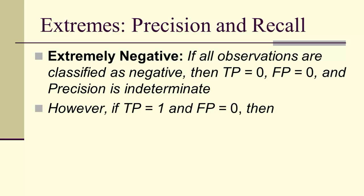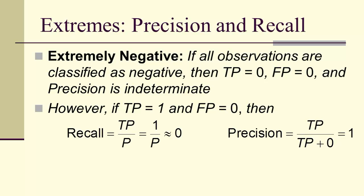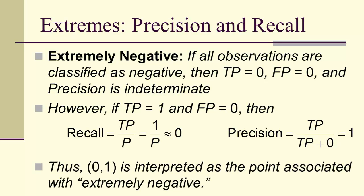However, if we start with 1 true positive, then the recall is practically 0, if of course the capital P is relatively large, and the precision starts out at exactly 1. So the 0,1 point is often associated as the point corresponding to extremely negative.